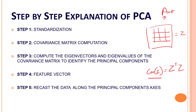The next step is getting our feature vector and recasting the data along the principal component axes. We calculate the new features or principal components from the eigenvectors and eigenvalues. The new feature set is formed, and we decide what to keep and what to remove. We only keep the relevant or important features in the new dataset, and the unimportant features are removed. That's how we get the principal components.